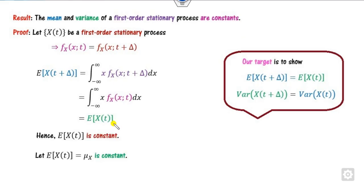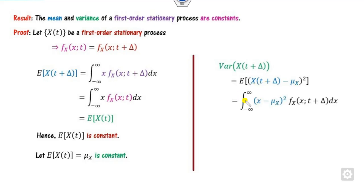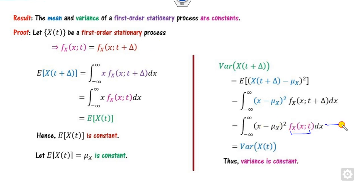The first part is proved — the mean is a constant. For the variance, we use the standard definition: Var(X) = E[(X − μ)²], where μ is the expected value computed earlier, which is a constant. Integrating from minus infinity to infinity using equation (1), the variance also turns out to be constant. Hence both the mean and variance are constants for a first-order stationary process.